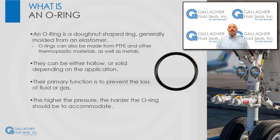So, what is an O-ring? Terms that describe an O-ring are torus, donut, or circular profile. Most O-rings are solid but they can also be hollow. The primary function of an O-ring is to prevent the loss of a fluid, liquid, or gas. This is most often accomplished through the pressure of the fluid squeezing the O-ring into the corner of the O-ring groove.